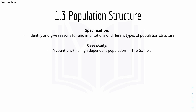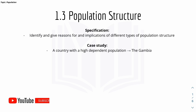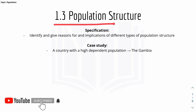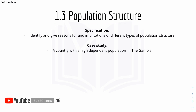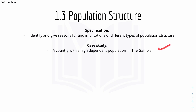Hey friends, my name is Yi Yi and welcome to a new video for IGCSE Geography. Today we have 1.3 Population Structure. Here is the specification from the website, and in this video we have one case study which is a country with a high dependent population — we'll look at the Gambia.